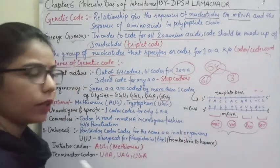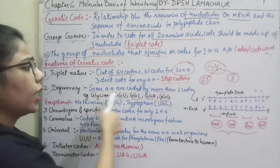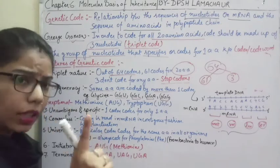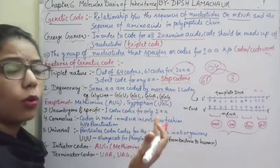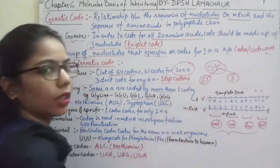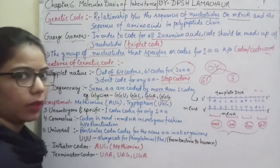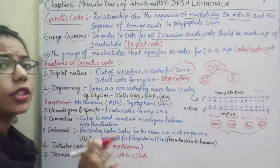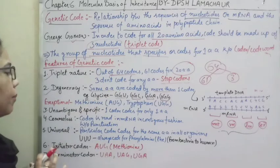Because some amino acids have more than one codon — three, four, or even five — that is how the total reaches 61. If every amino acid had only one codon, it would not be possible to make 61. So the degeneracy of the genetic code means that amino acids can have more than one codon, with one or two exceptions.